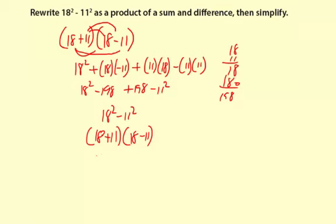We have 18 plus 11 is 29. And then 18 minus 11 is 7. So really, this 18 squared minus 11 squared is the same as 29 times 7. So you multiply it out from there. 20 times 7 is 140. And then 9 times 7 is 63. So we're going to add. We're going to get 203.